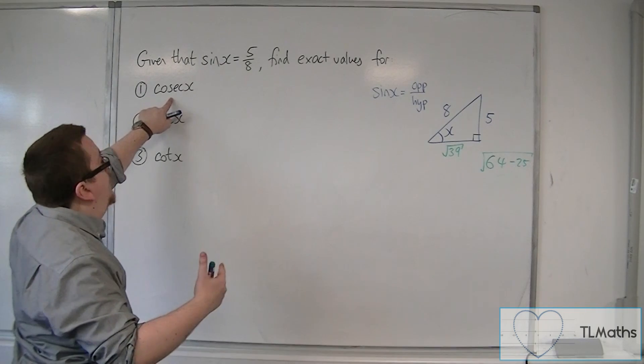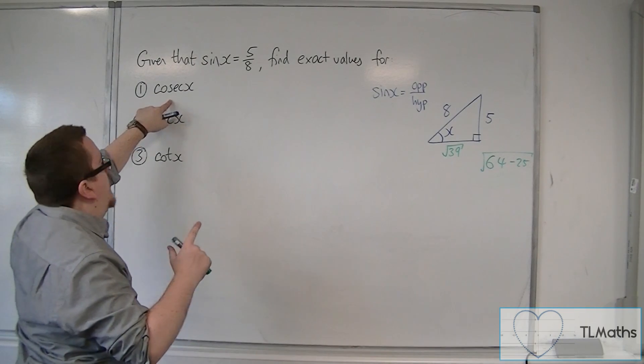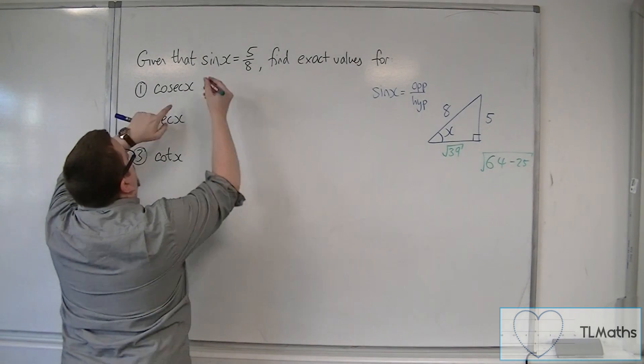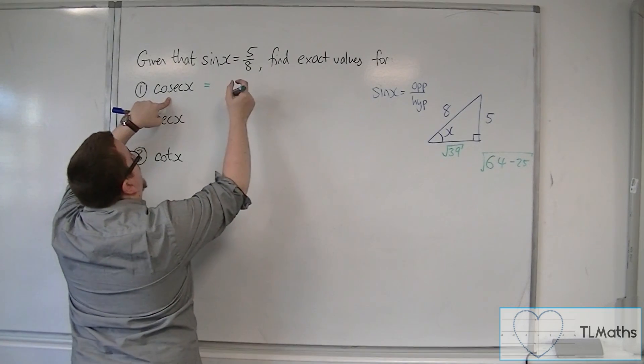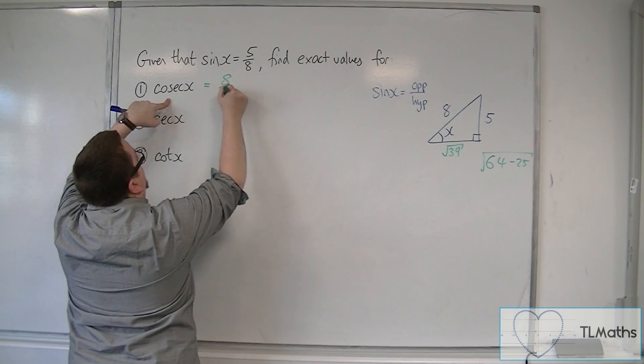Cosec is 1 over sine, so if this is 1 over sine, then this is 1 over 5 eighths, so that's just 8 fifths.